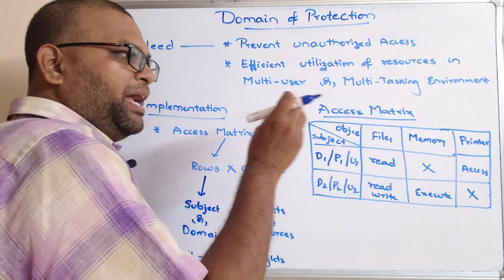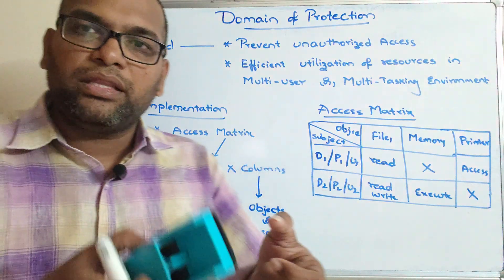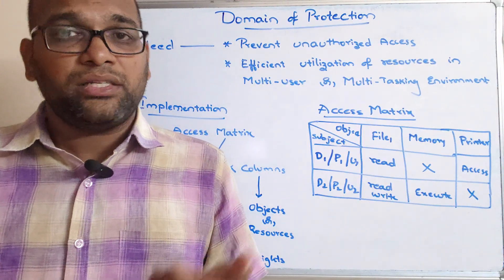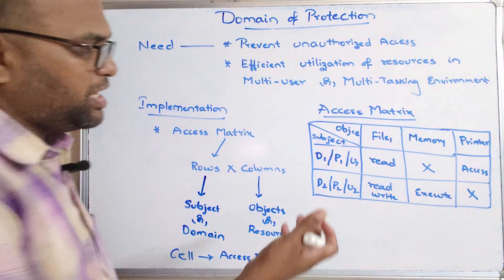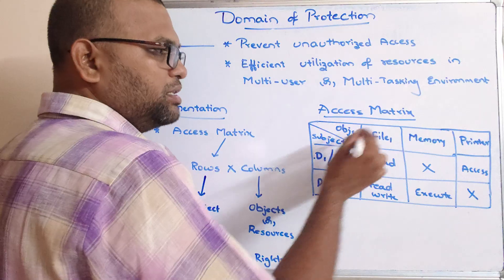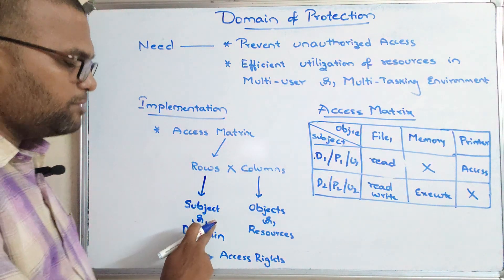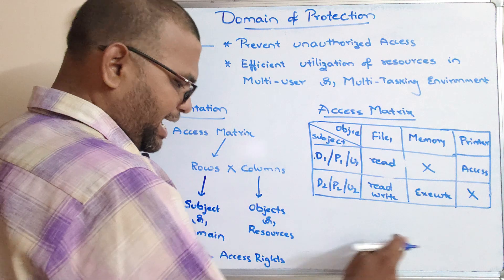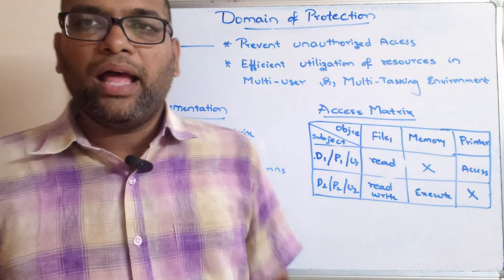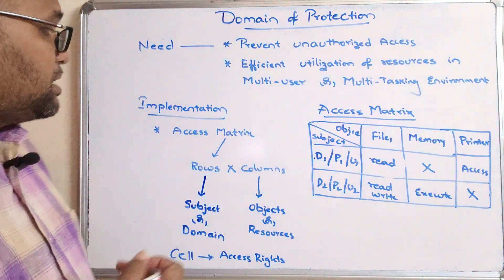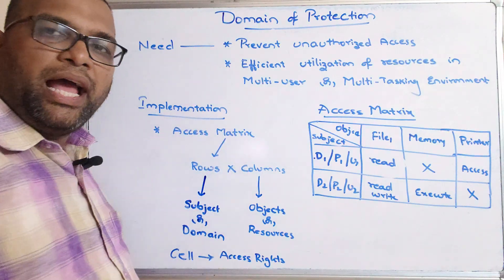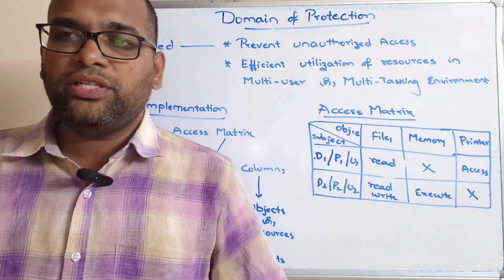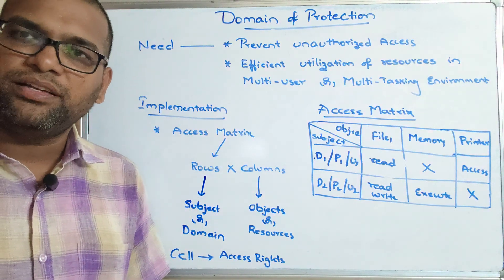In this way the access matrix maintains all information about domains — rows are subjects or domains, columns are objects or resources, and cells are access permissions such as read, write, execute, or printer access. This is how domain of protection is implemented using the access matrix. If you enjoyed the session, like and share it with your friends, and don't forget to subscribe. Thanks for watching.